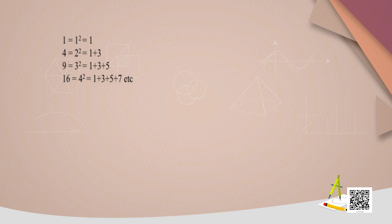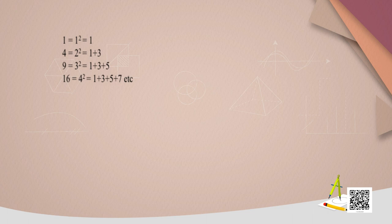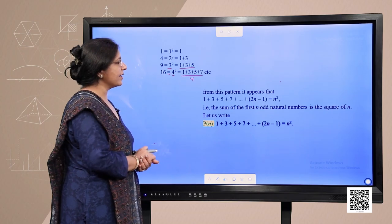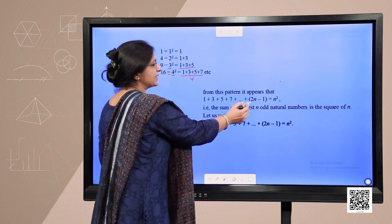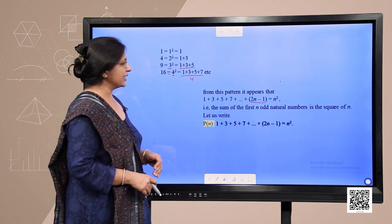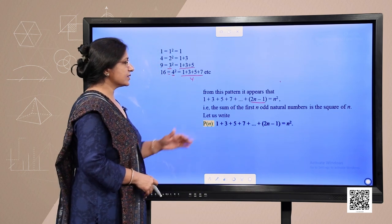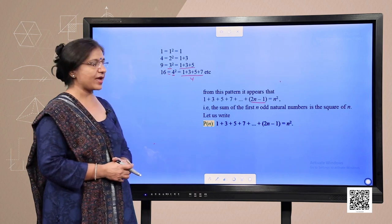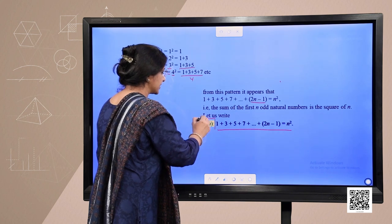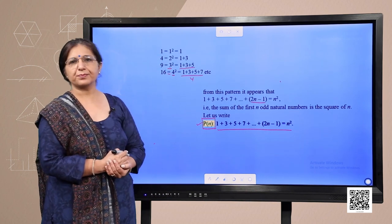Now observe this pattern: 1 is an odd number and equals the square of the first natural number (1²=1). The sum of the first two odd numbers, 1+3=4=2². The sum of the first three odd numbers equals 3². From this pattern we notice that 1+3+5+7+...+(2n-1) equals n². So the sum of the first n odd natural numbers is n². Let us write this statement as P(n) — this is the first step of using the principle of mathematical induction.